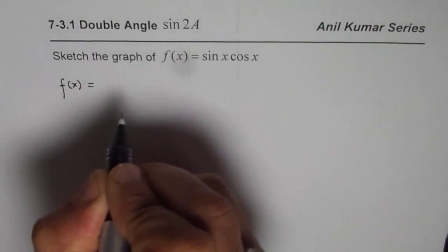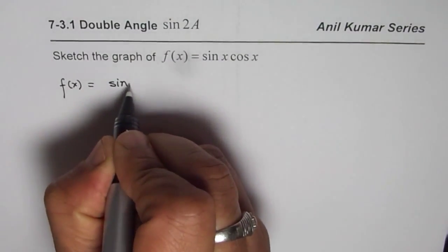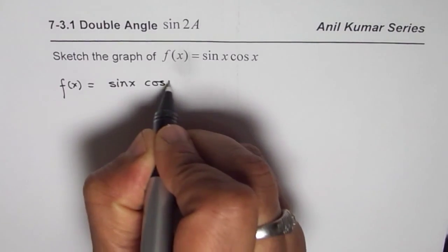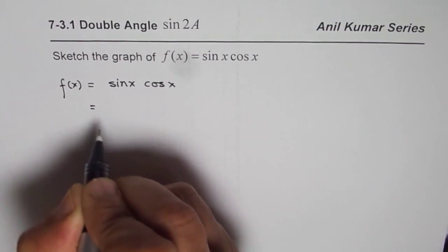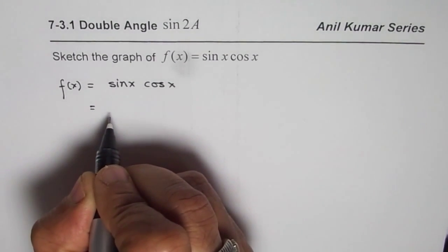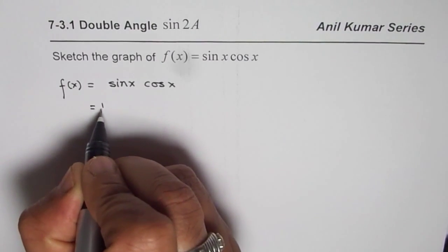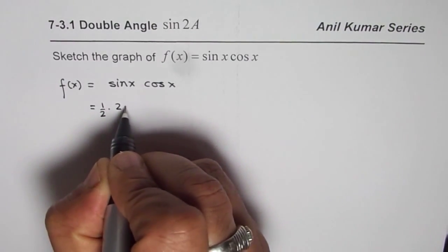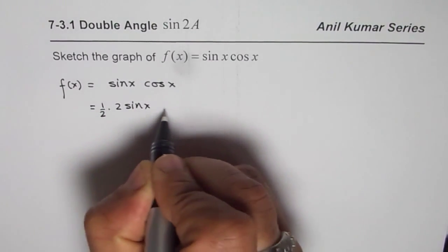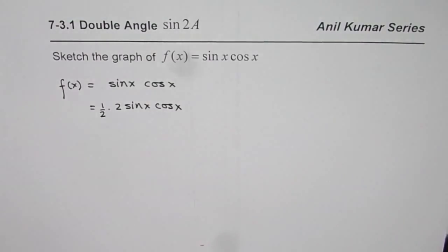f(x) is given to us as sine x cos x. Now how about multiplying it by 2 and dividing by half. I mean half times 2. Sine x cos x is equal to what?